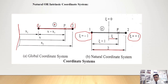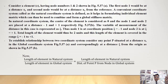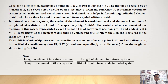The distance from the center to a point is zeta, and the distance from node 1 to point P is zeta + 1. Consider an element with local nodes 1 and 2, where node 1 is at distance x1 and node 2 is at distance x2. A convenient coordinate system called the natural coordinate system is defined, as it helps in formulating the element matrix, which can then be combined to form a global stiffness matrix.